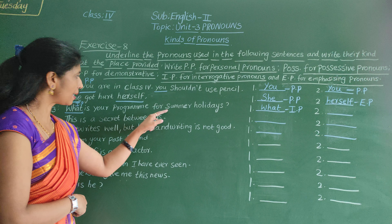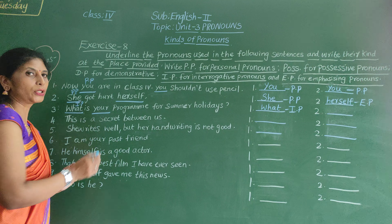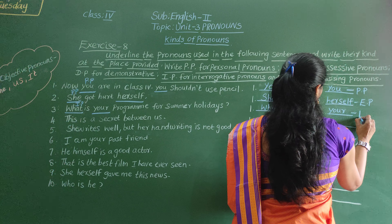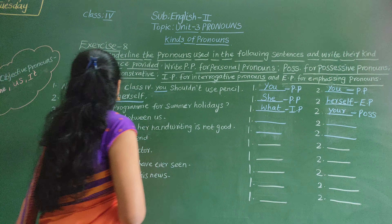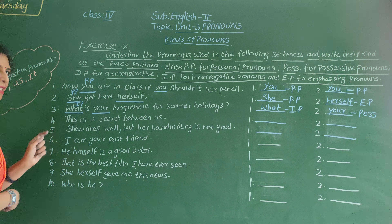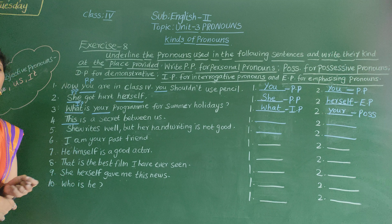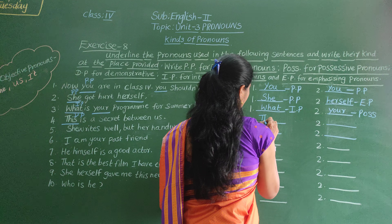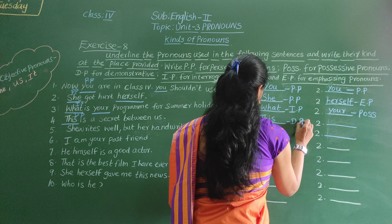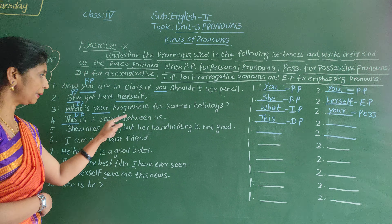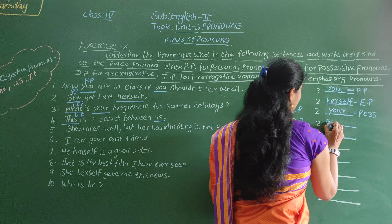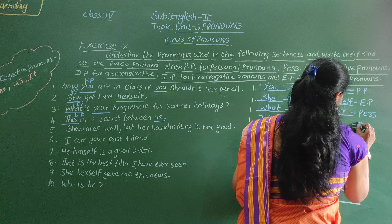Next: What is your program for summer holidays? 'What' is an interrogative pronoun. 'Your' is a possessive pronoun. Next: This is the secret between us. 'This' is a demonstrative pronoun — DP. 'Us' is an objective pronoun.